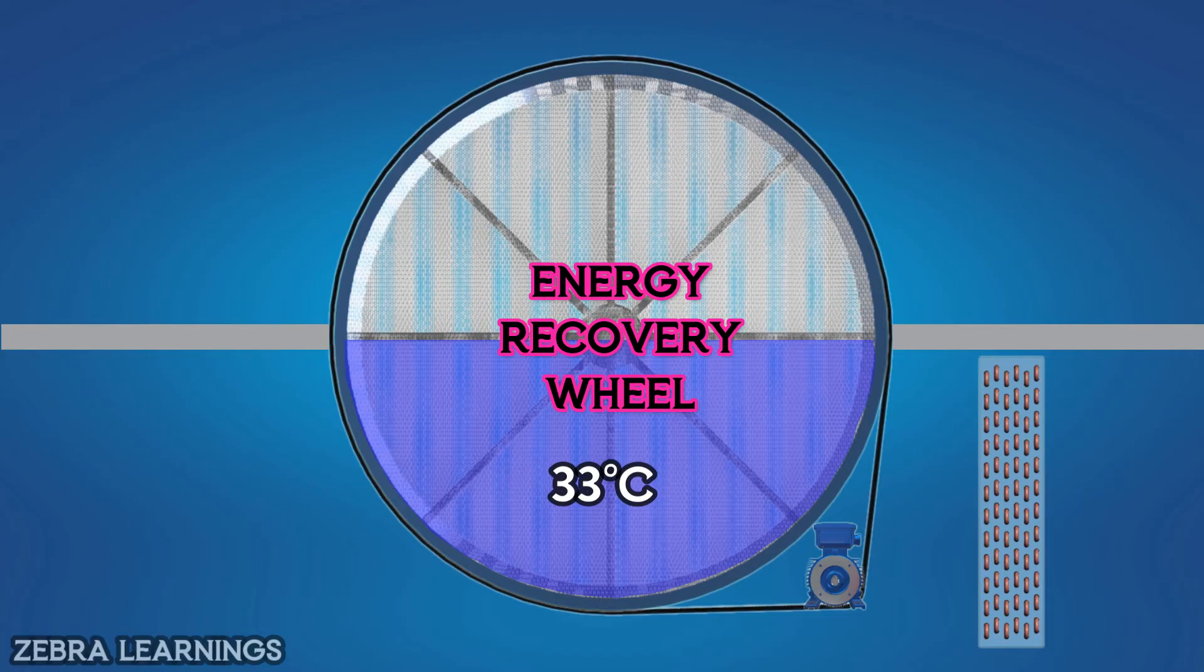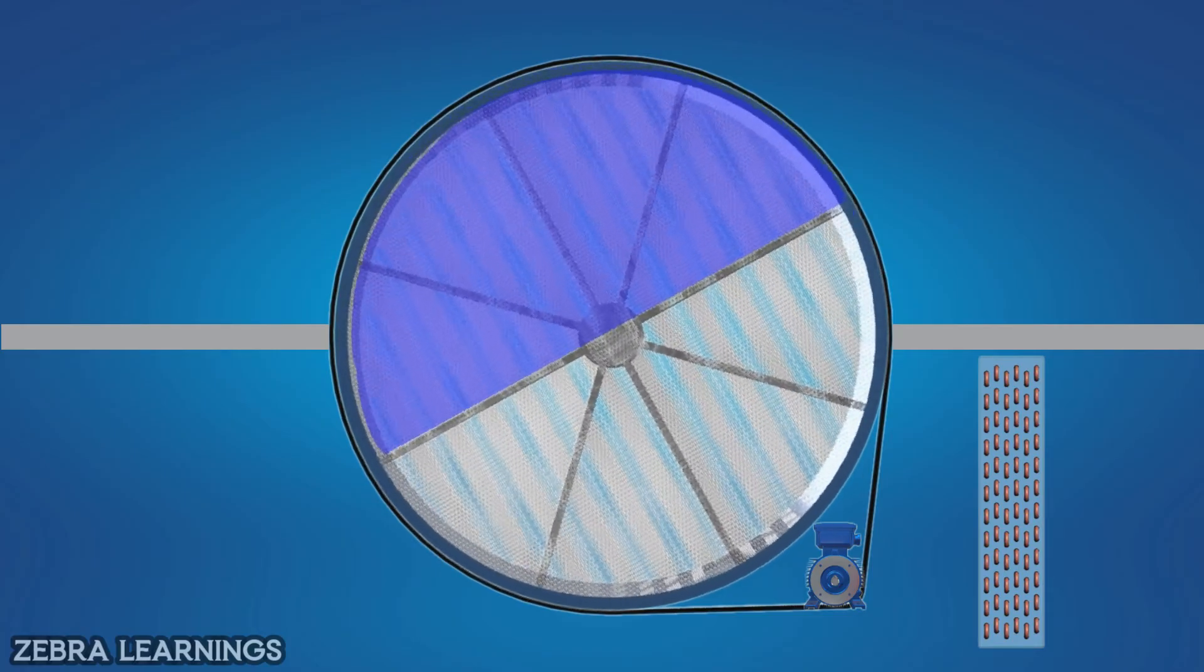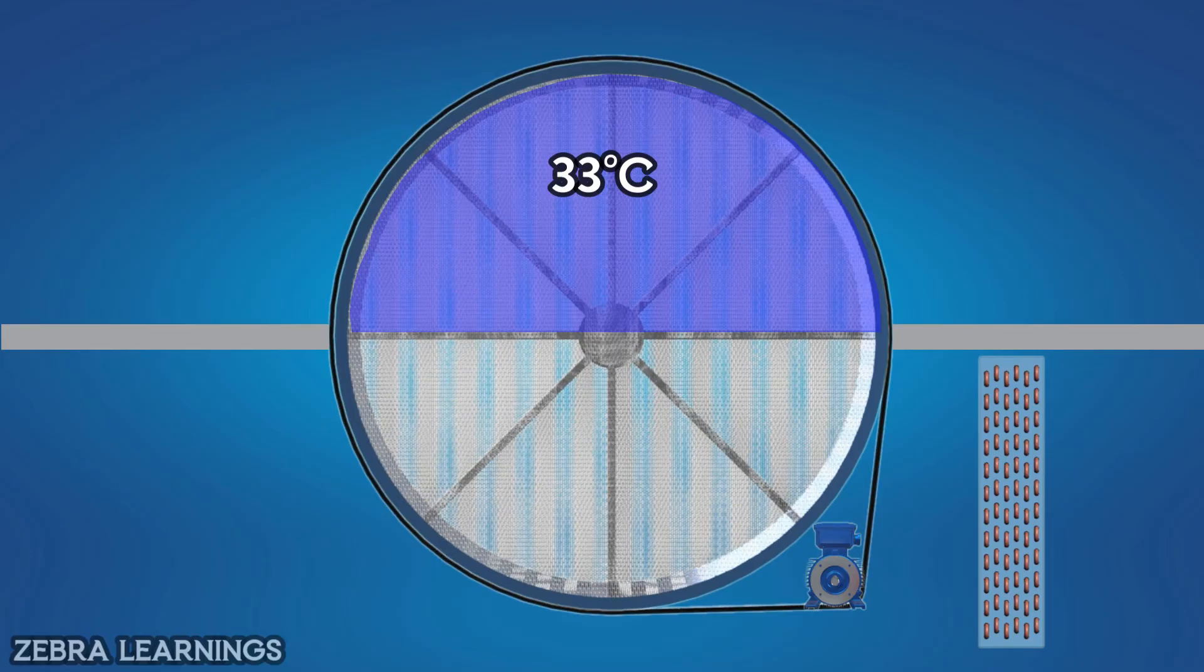At 33 degrees Celsius, the lower part of the thermal wheel rotates and goes up. At the top, the return air from the building enters at a temperature of 25 degrees Celsius. This air travels through the thermal wheel and exits at 29 degrees Celsius.